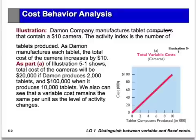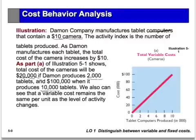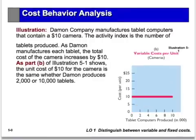Damon Company manufactures computers and one of the items they're looking at is the cost of the camera within the computer — ten dollars for every computer. If they produce 2,000 units the cost is $20,000. If they increase production five times from 2,000 to 10,000 units, the cost goes up from $20,000 to $100,000. This is a variable cost. But on a per unit basis it still remains ten dollars per unit, no matter how many cameras are produced.